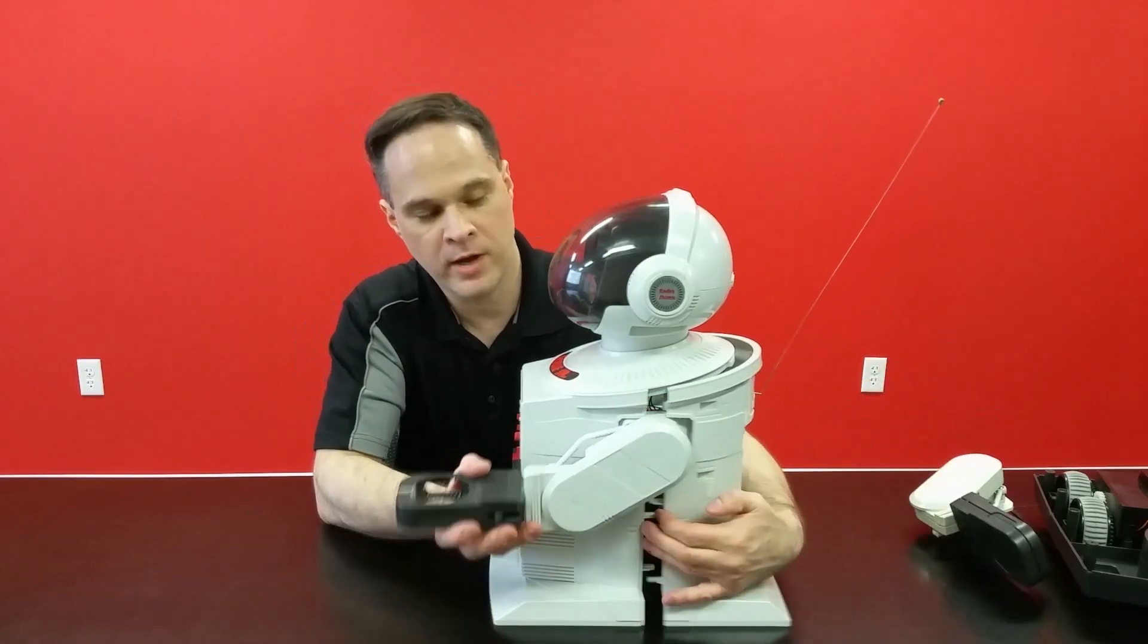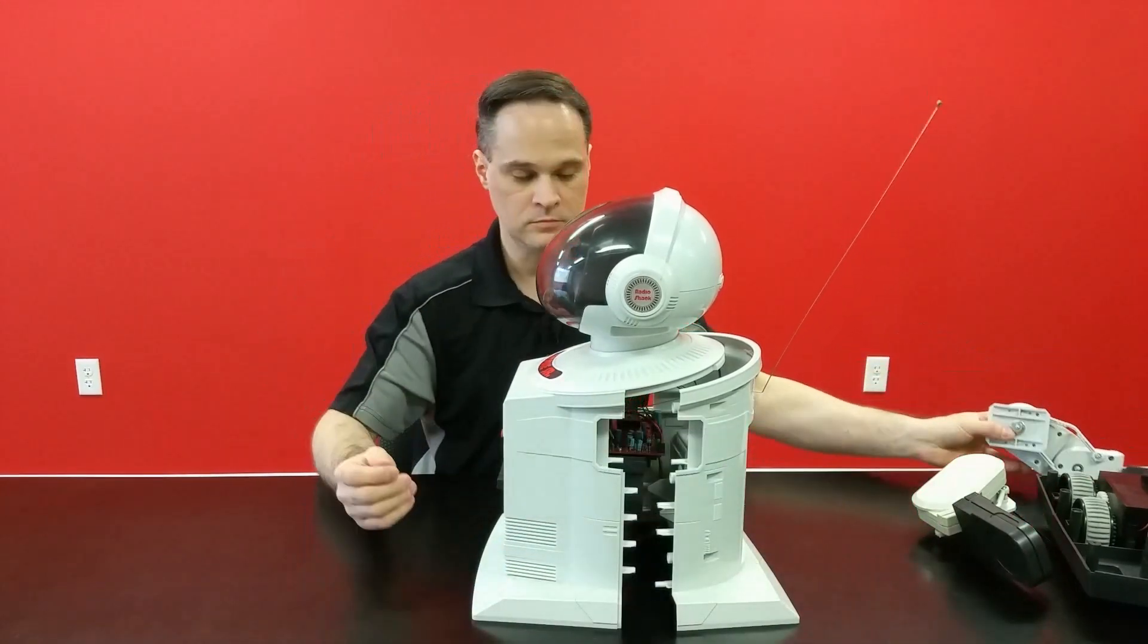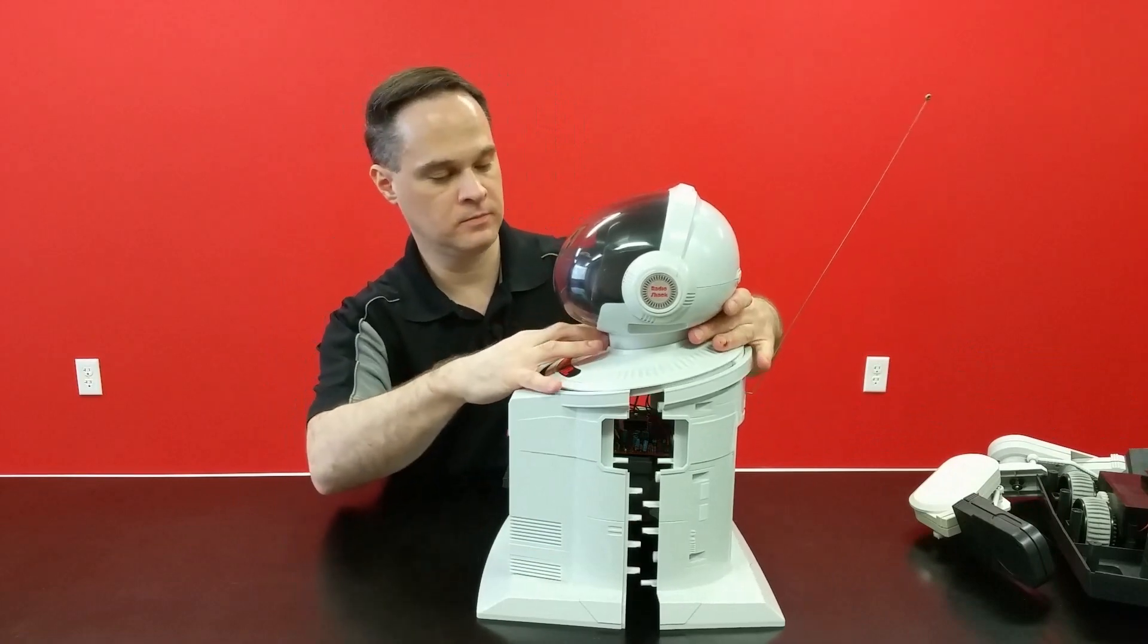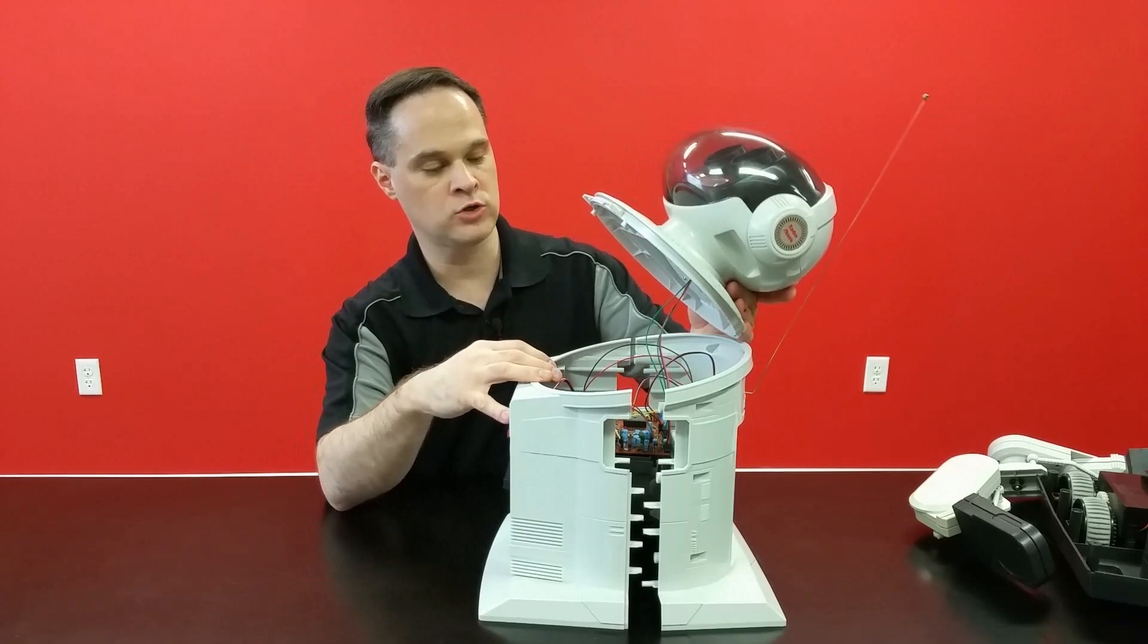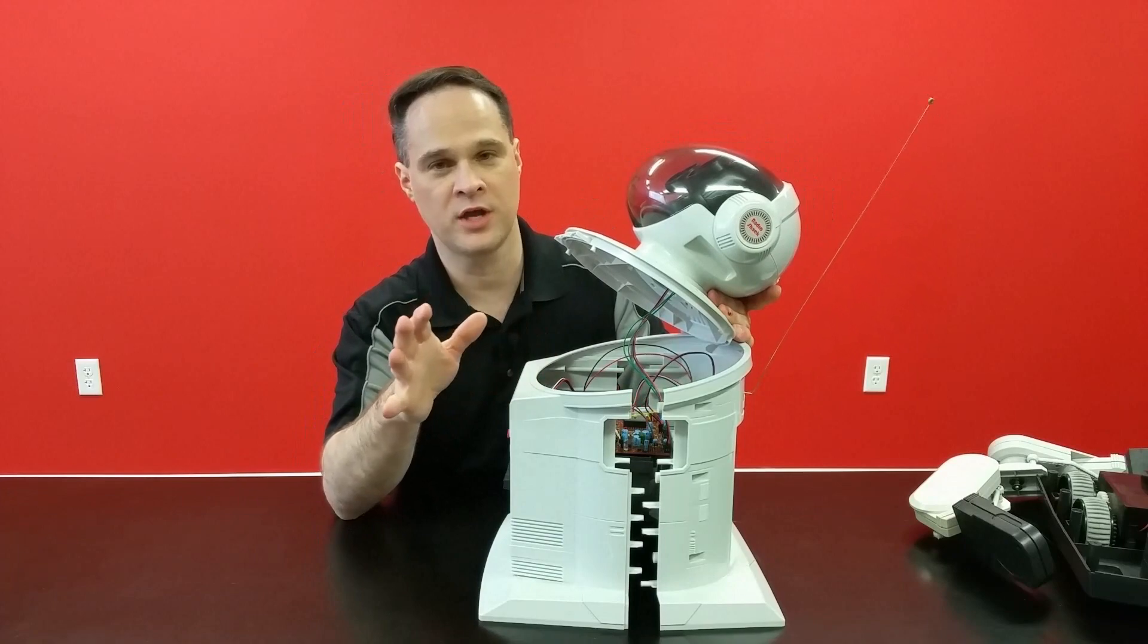We can take the other arm off by just sliding it. The entire arm assembly comes off. Finally, we can slide the head toward the back and that will release it. We'll have two wires going down into the Robie. I'm going to cut to a close-up of that so you can see how that's all connected.